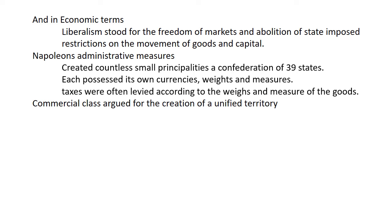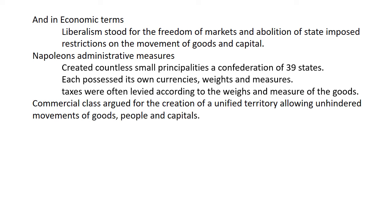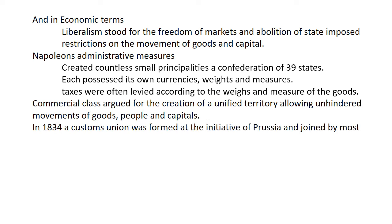This created a lot of obstruction for the commercial class, who demanded the creation of a unified territory allowing unrestricted movement of goods, capital, and people. In 1834, a customs union — the Zollverein — was formed at the initiative of Prussia and was joined by most of the German states.